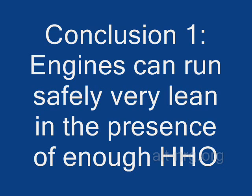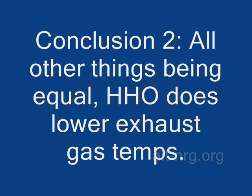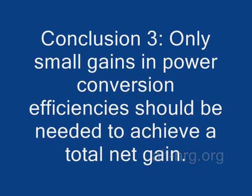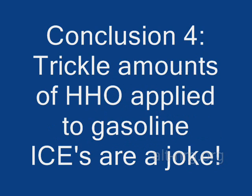Other conclusions I can now confidently make from these experiments: Engines can run very lean and safely in the presence of enough HHO — the key word is enough HHO. All things being equal, with no changes in mixture or timing, HHO does lower exhaust temps 20 to 25 degrees and reduces fuel consumption slightly. With only small gains in electrical and electrochemical conversion efficiencies, and with mixture and timing changes to leverage HHO, a net gain should be achievable at lighter loads. The tiny cells being used on full-sized automotive gasoline engines now are a joke — trickle amounts of HHO do not and will not cut it. Real gains can only be achieved with real amounts of HHO.